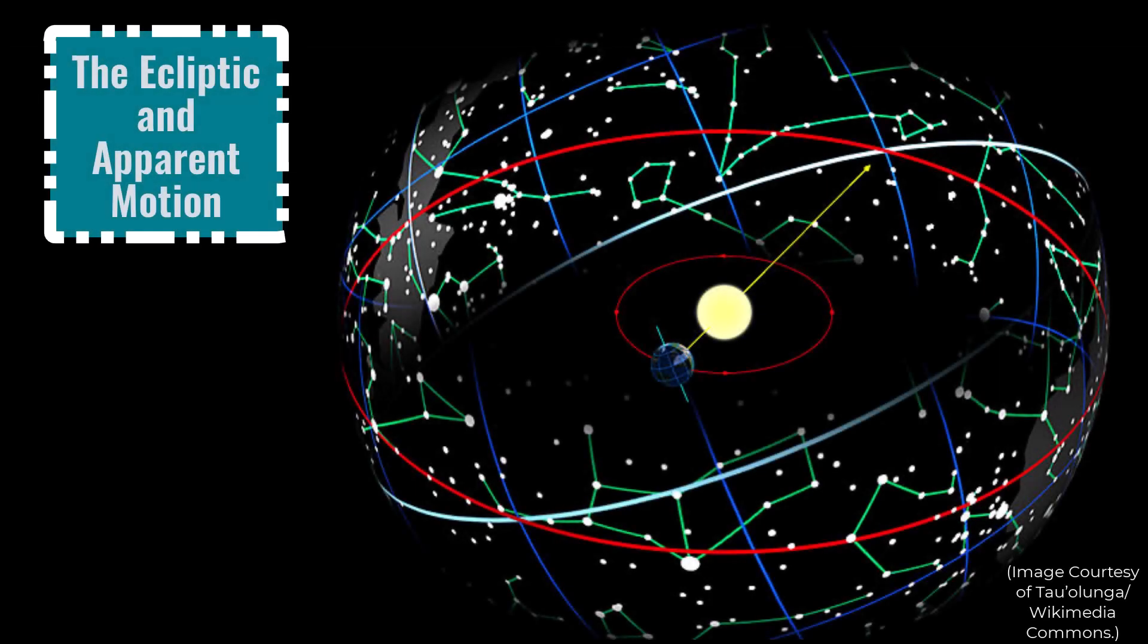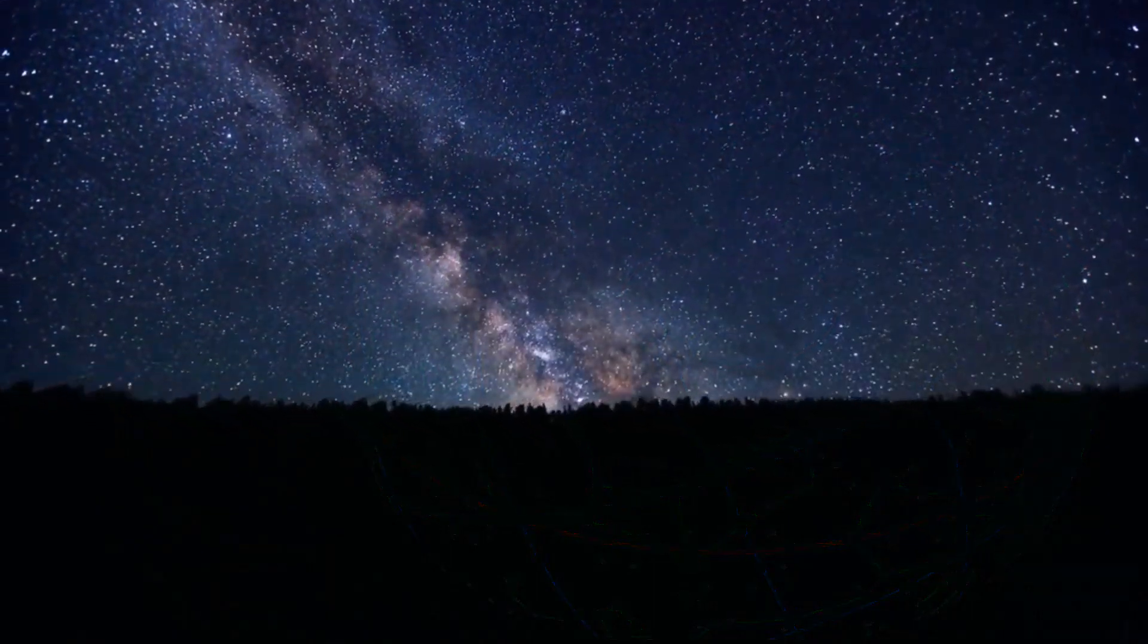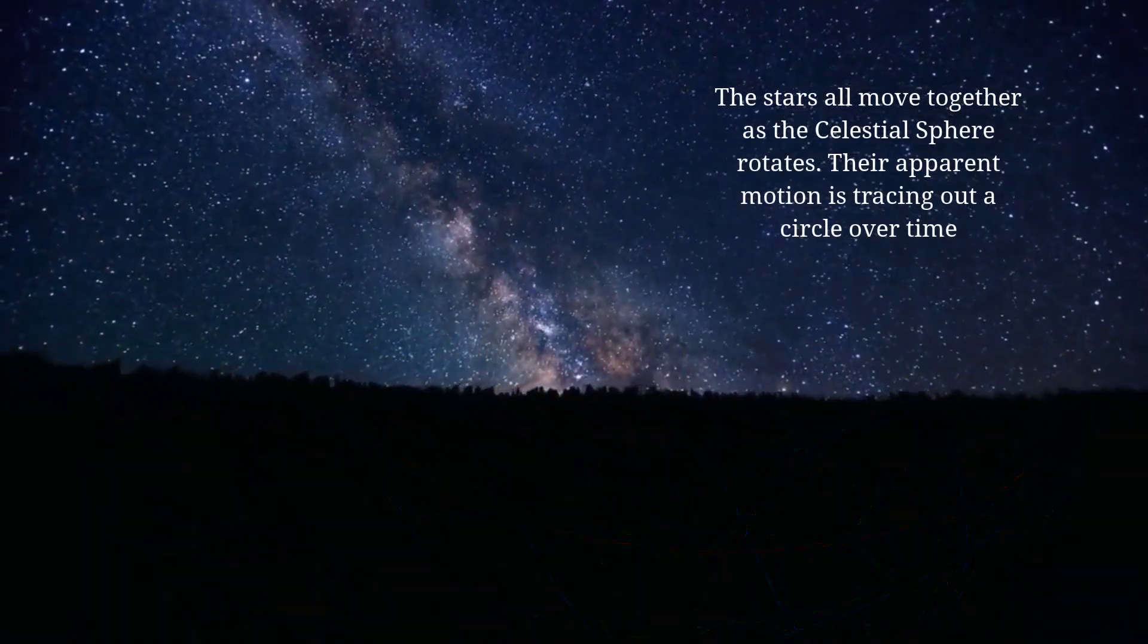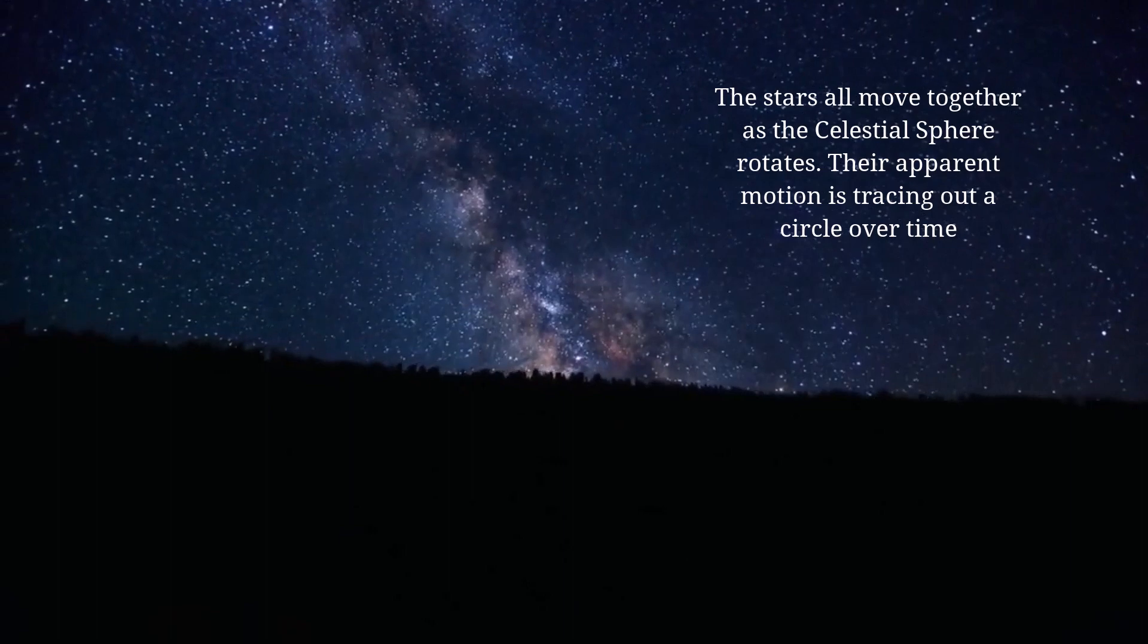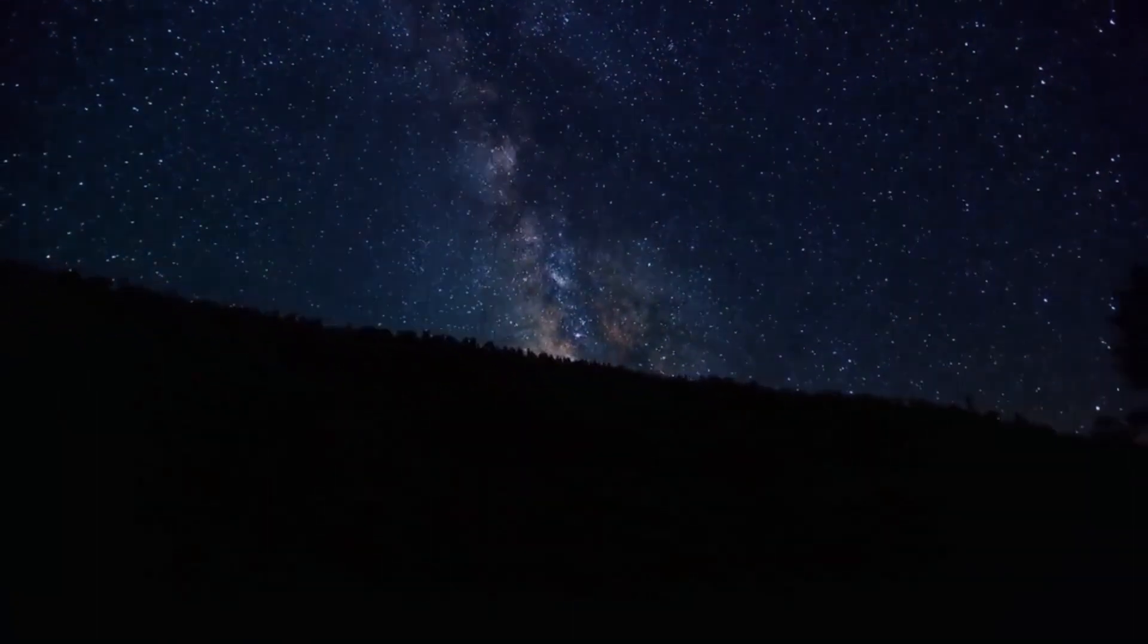The ecliptic and apparent motion. Following on from the celestial sphere the apparent motion of an object is the path it traces out in the sky over time as it rotates with the celestial sphere. Most stars are so far away that they don't move with respect to the celestial sphere however one exception is the Sun.